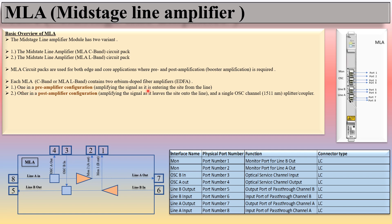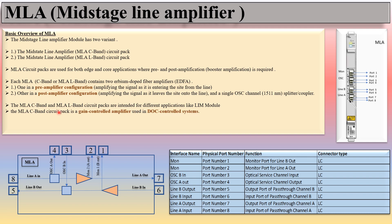One EDFA is used in the pre-amplifier configuration, amplifying the signal as it enters the site from the line. The other is in post-amplifier configuration, amplifying the signal as it leaves the site onto the line, with an OSC channel 1511 nm splitter/coupler. The difference between MLA C-band and MLA L-band: MLA C-band circuit pack is a gain-controlled amplifier used in DWDM control systems, while MLA L-band circuit pack is a fixed-gain amplifier used in passive photonic systems that are manually equalized using pads.